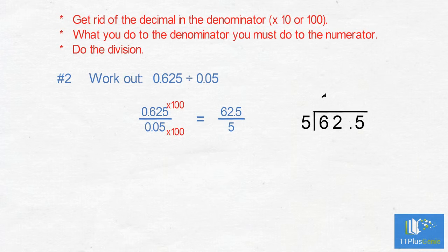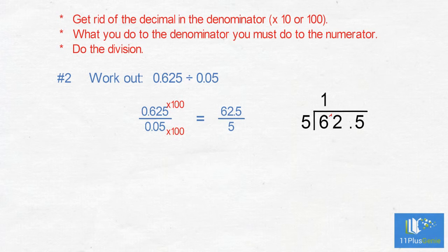5s into 6 is 1. Carry the remainder of 1 over. 5s into 12 is 2 and carry the remainder of 2 over to the 5. Put down the decimal in your answer. 5s into 25 is 5 with no remainder. 0.625 divided by 0.05 equals 12.5.